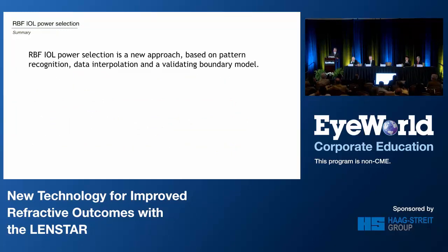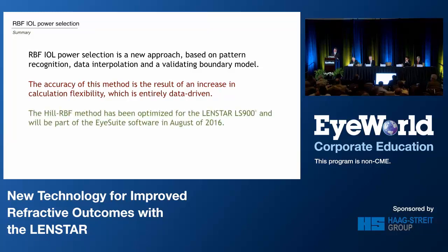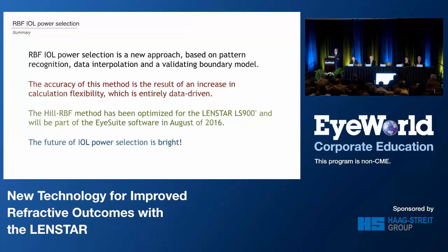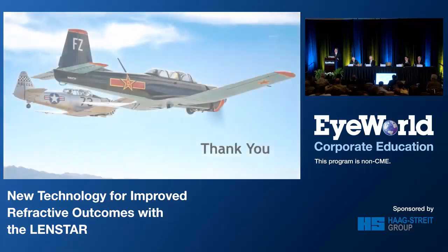In summary, this is a completely new approach for IOL power calculations — through the generosity of Haag-Streit and their sponsoring of this research for the last seven years — using pattern recognition, data interpolation, and a validating boundary model. The increase in accuracy over other methods is based on increased flexibility in the calculation methodology. This has been optimized for the Haag-Streit LENSTAR. You can use other devices, but because of the increased density of keratometry and the unique form of axial measurements, this is the device meant to be used for this. Personally, I see the future of IOL power calculations as being very bright — and every six months, we're going to be able to up the game. So that elephant in the room, hopefully, will begin to fade away. Thank you.